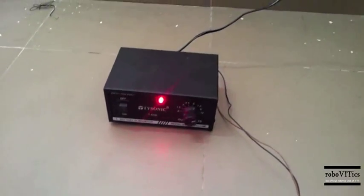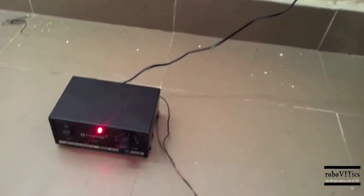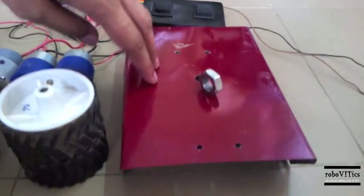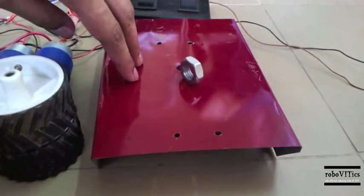This is a battery eliminator through which we will be converting 220V AC supply to the desired DC supply. These are the wires which are used to connect battery eliminator to the motors. This is the chassis part in which we will be mounting our motors and wheels.